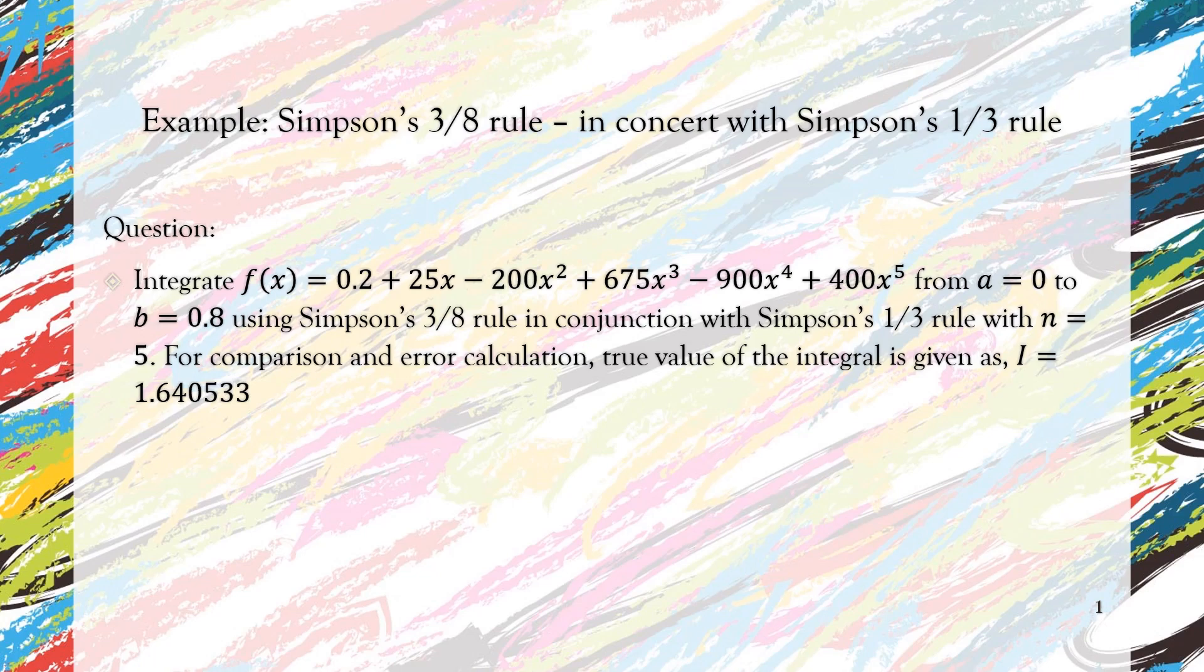Hello and Assalamualaikum. This is an example of Simpson's 3/8 rule when it is used together with Simpson's 1/3 rule. Most of the time we do this when we have an odd number of segments, which might need a combination of these two rules. The question is the same, but it is determined that the number of segments is 5.